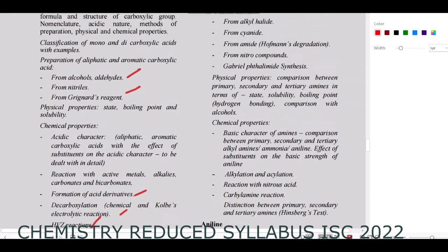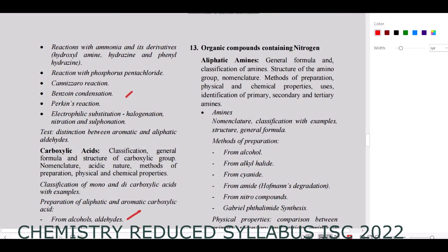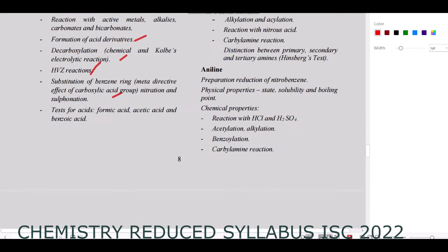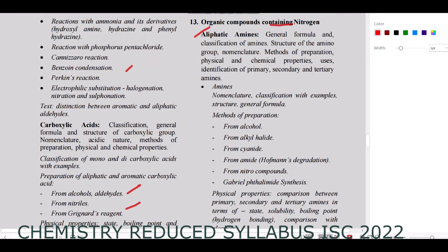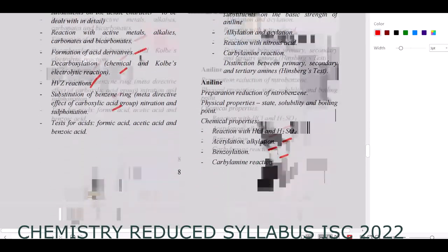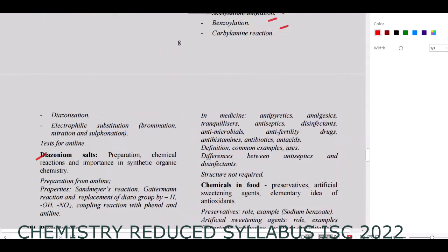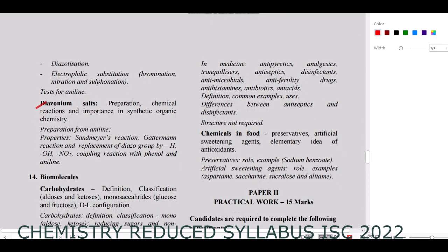For Nitrogen Compounds: aniline (acetylation, alkylation, benzoylation), aliphatic amines, and diazonium salts are present. However, the point that is removed is cyanide and isocyanate — that part is not in the reduced syllabus.